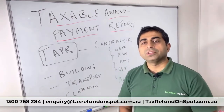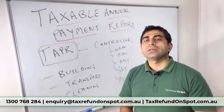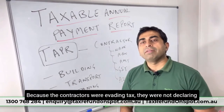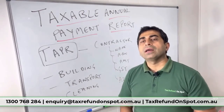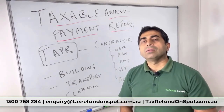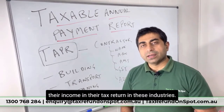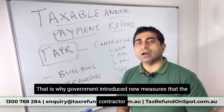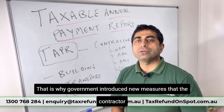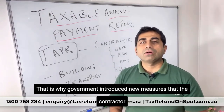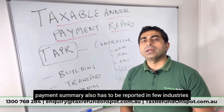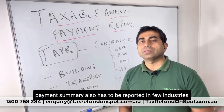Why is this a new provision? Because contractors were evading tax — they were not declaring their income in their tax return in these industries. That is why the government introduced new measures that the contractor payment summary also has to be reported in these few industries.